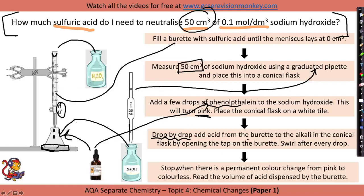When the acid completely neutralises the alkali, there will be a permanent colour change from pink to colourless — that's the end point of the reaction for this indicator. We can then read the volume of acid dispensed by the burette; for example, if the acid went all the way down to a certain mark, we would read that volume off the burette.